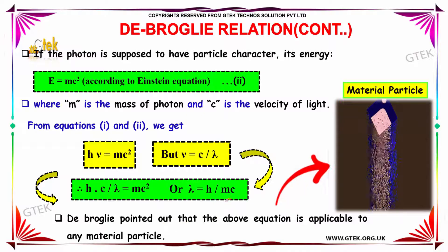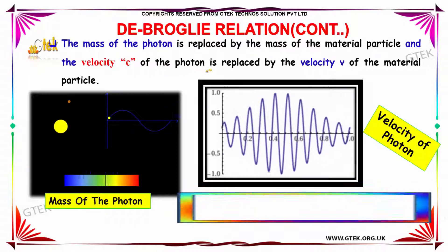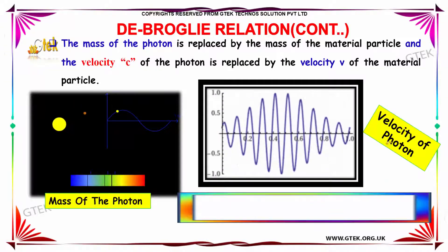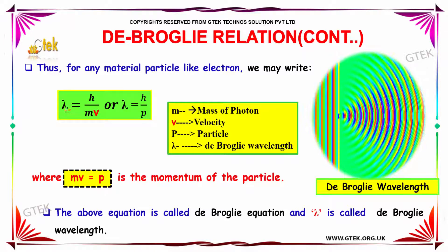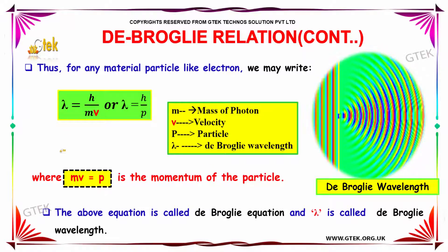De Broglie pointed out that the above equation is applicable to any material particle. The mass of the photon is replaced by the mass of the material particle, and the velocity c of the photon is replaced by the velocity v of the material particle. Thus, for any material particle like electrons, the de Broglie wavelength is λ = h/mv, or equivalently λ = h/p, since mv = p is the momentum of the particle. This equation is called the de Broglie equation and λ is called the de Broglie wavelength.